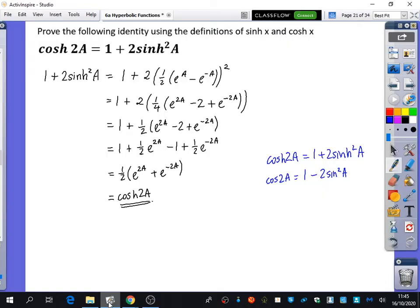So we've been proving some of these identities so far, and we want to now see why are they the same as trigonometric ones, not really why, how are they the same as the trigonometric ones, and how are they different.